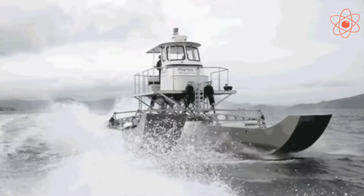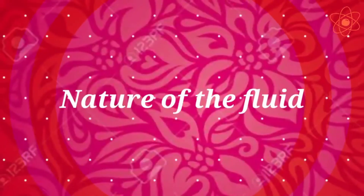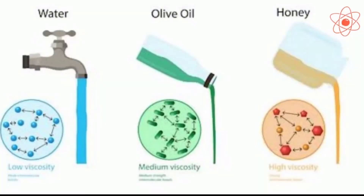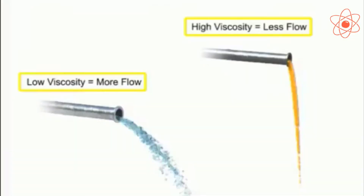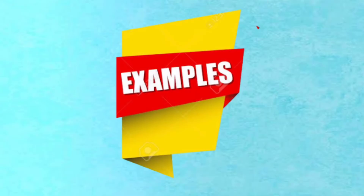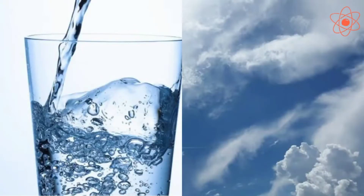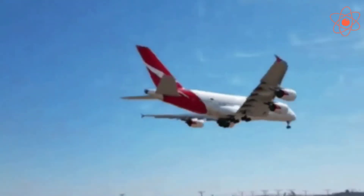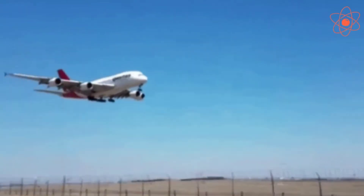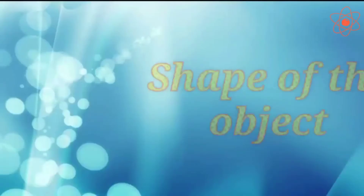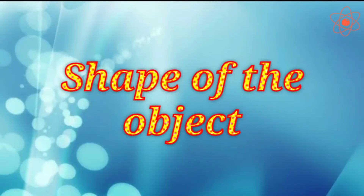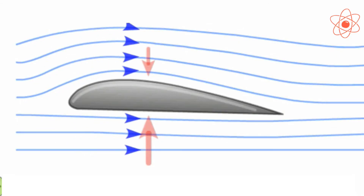Third, nature of the fluid: higher the viscosity or thickness of a fluid, greater will be the frictional force acting on an object moving through it. For example, water is thicker than air, so there is more friction in water compared to air. This is why aeroplanes move faster than ships.